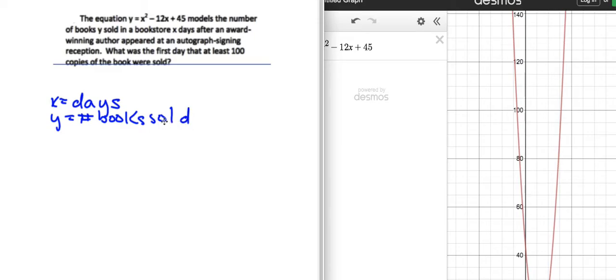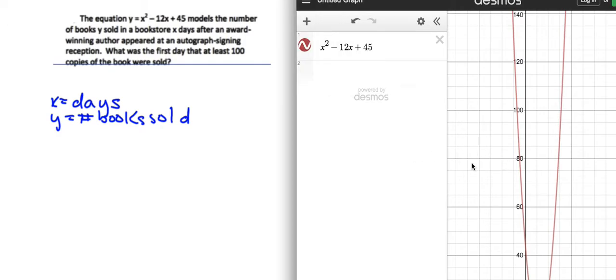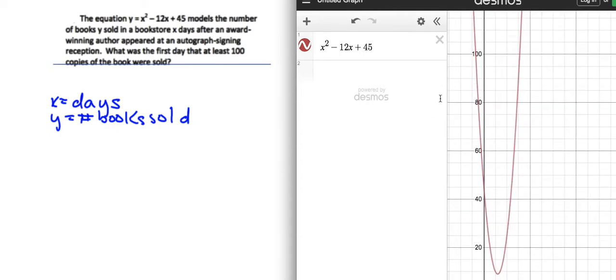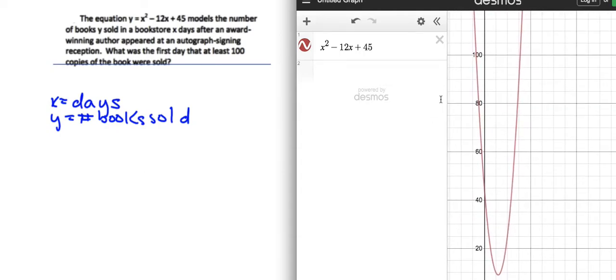Because it's always good when you're looking at the question, to kind of like rewrite what the x and the y stand for, because it makes more sense. So it's the number of books sold, book number sold in a bookstore, x days after an award-winning author appeared at an autograph signing reception. What was the first day that at least a hundred copies of the book were sold? So, if you look over here at the picture, we look at the graph of it, we'll move it over, so it started at forty-five, you can kind of tell, that was my starting value. So after zero days, it started at forty-five.